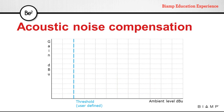The threshold is a user-defined level that establishes what is the minimum acceptable background noise for the processor to start working. We also need to set a maximum compensation level. This is the maximum gain that the processor will apply to a signal, and it is used to protect amplifiers and loudspeakers.